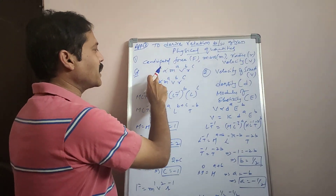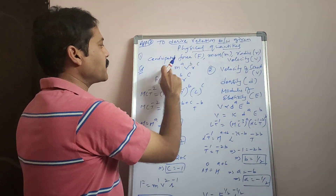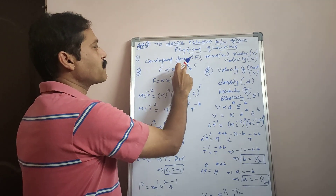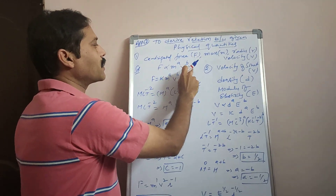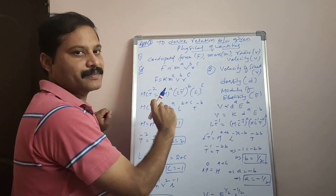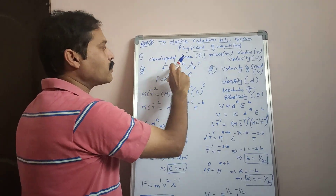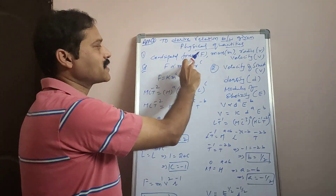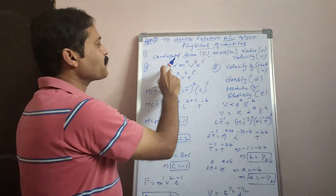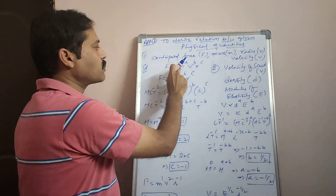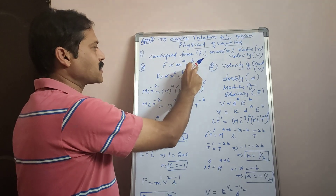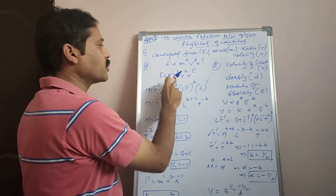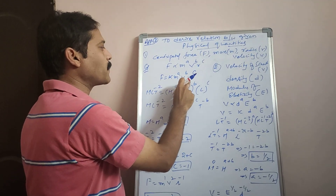For that, take the centripetal force F proportional to M to the power A, velocity to the power B, radius to the power C. So F is equal to some constant K into M power A, V power B, R power C. You can take the value of K as 1 in any system — CGS or SI system.